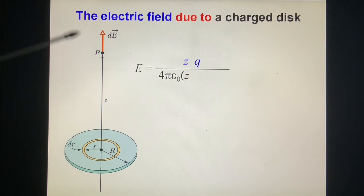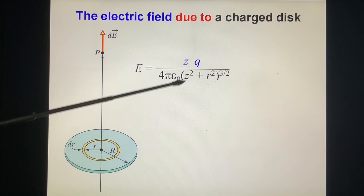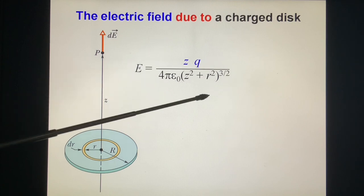We know from previous calculation the electric field at point P on the central line which is the distance Z from the center of the ring is E equal to ZQ over 4πε₀(Z² + R²)^(3/2) where Q is the charge of this ring.